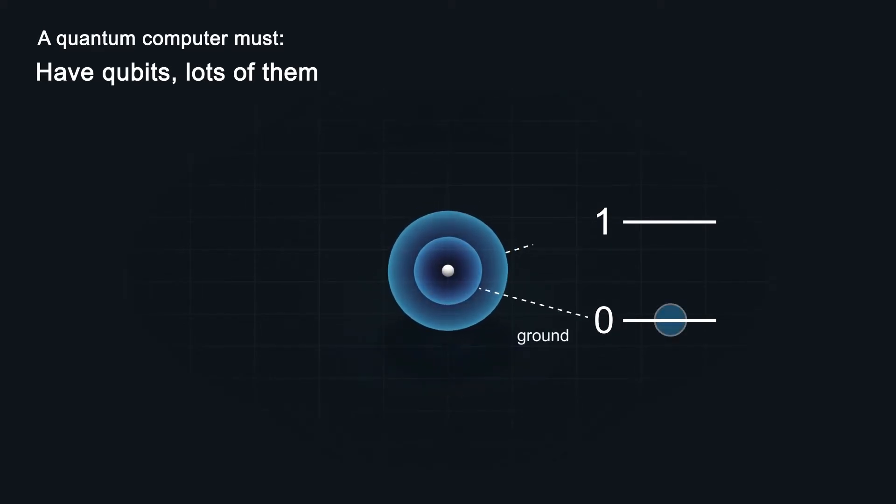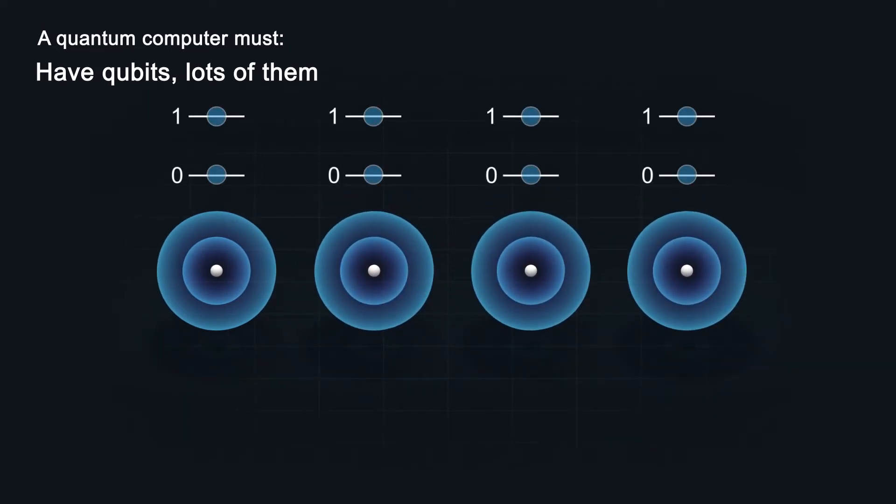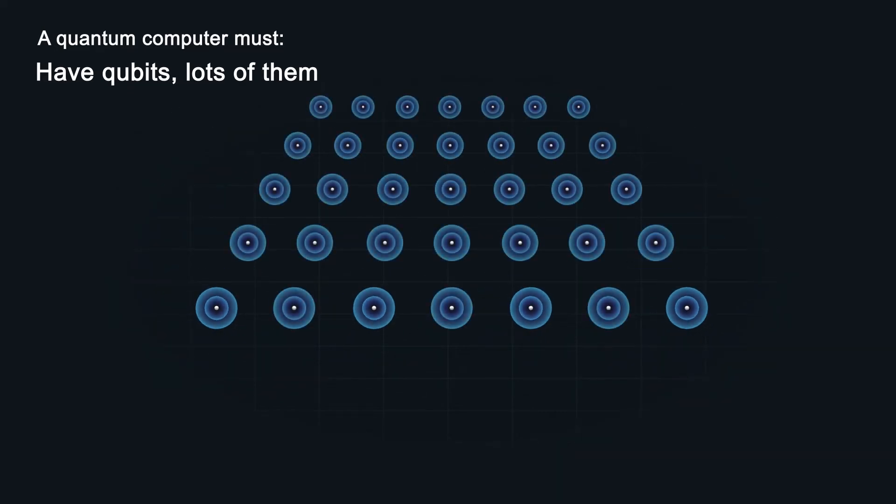An ion qubit is made from two of its energy levels. Ions of the same type are identical, so adding more qubits is simple. You just need to add more ions to the system. This is a major plus because a quantum computer will need lots and lots of qubits.